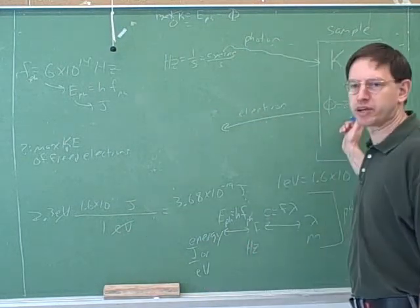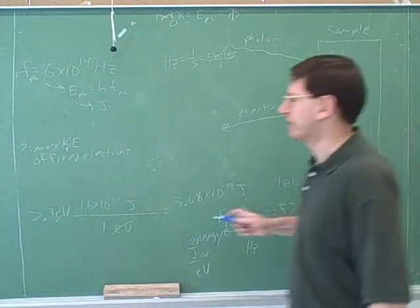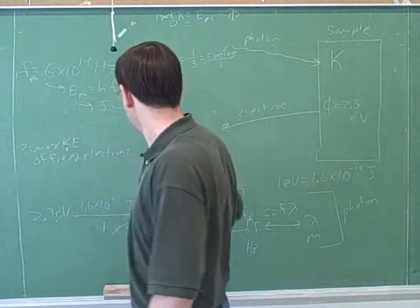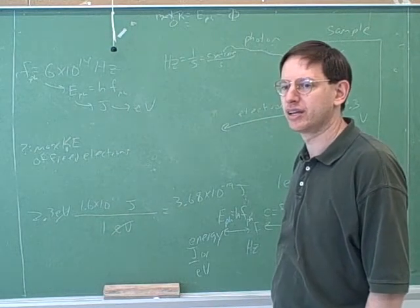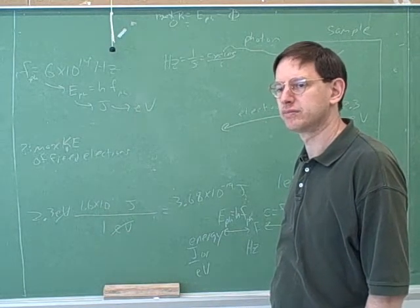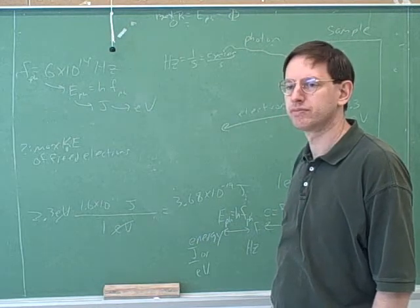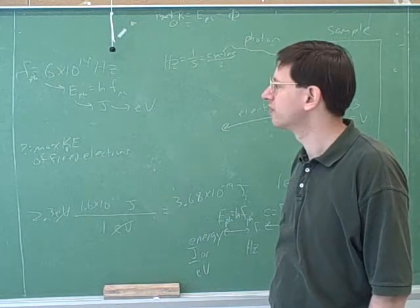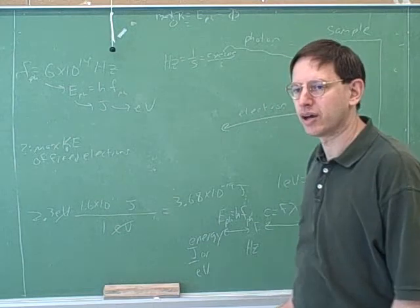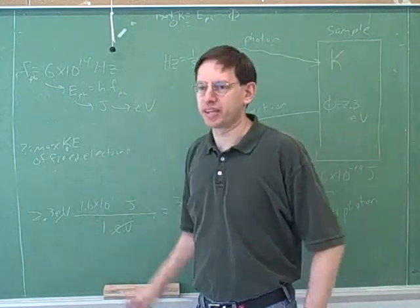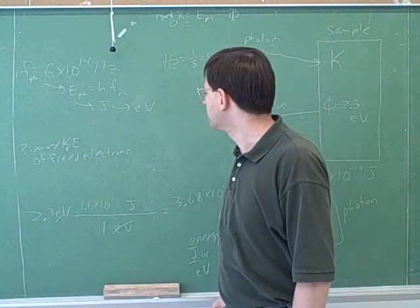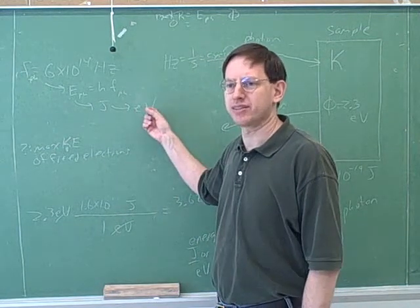Which means before you can compare it to the work function, you need to put it into electron volts. You would just flip this conversion ratio down here. And then you could do the subtraction to figure out what the kinetic energy was. Did you want to go through that numerically or does that make sense? Okay, good.